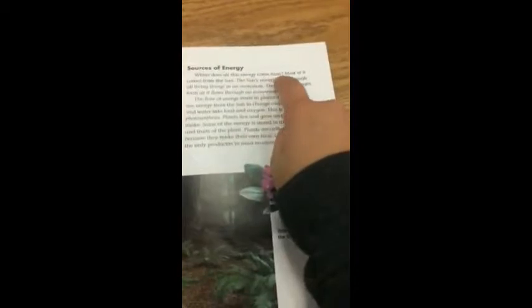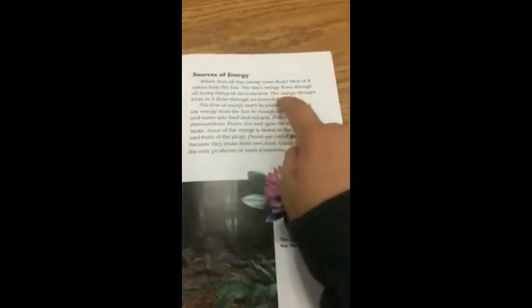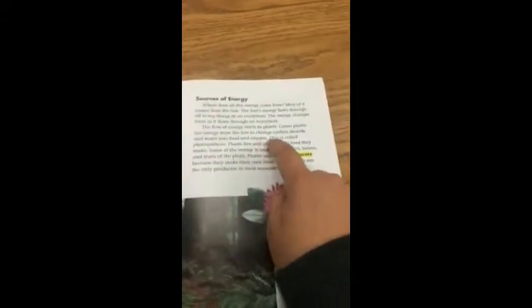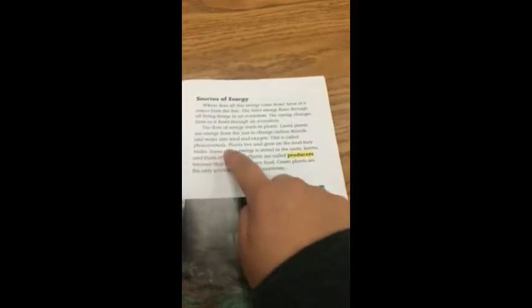Sources of Energy. Where does all this energy come from? Most of it comes from the sun. The sun's energy flows through all living things in an ecosystem. The energy changes form as it flows through an ecosystem. The flow of energy starts in plants. Green plants use energy from the sun to change carbon dioxide and water into food and oxygen. This is called photosynthesis.